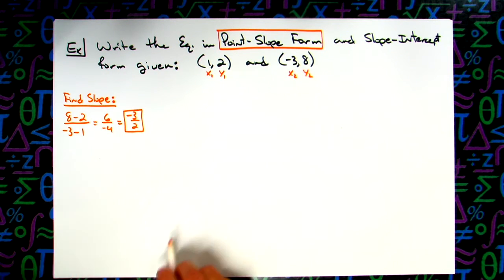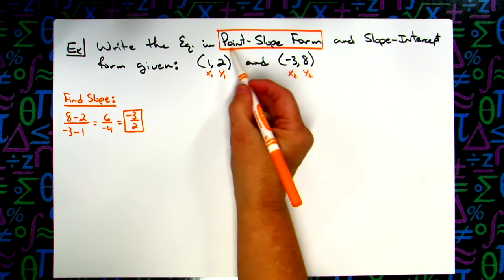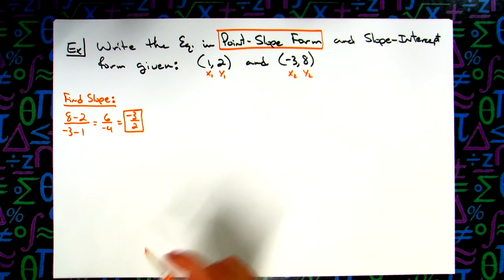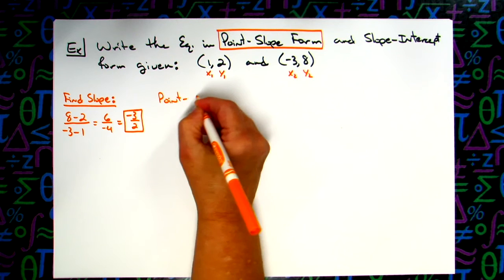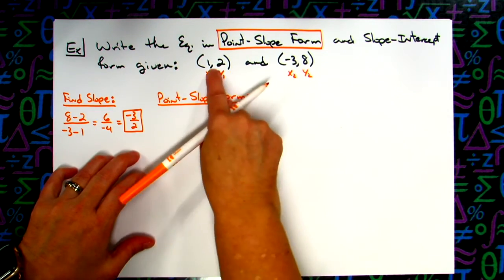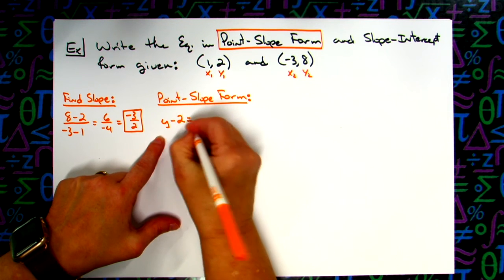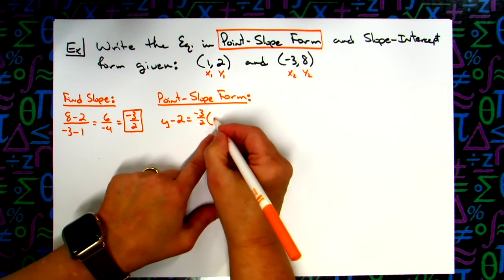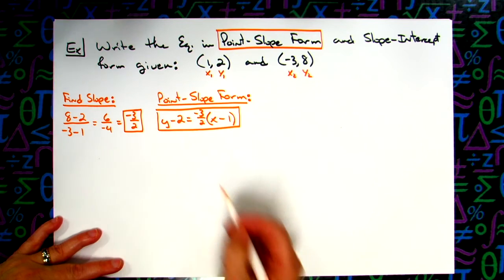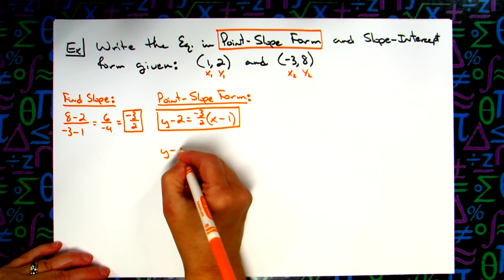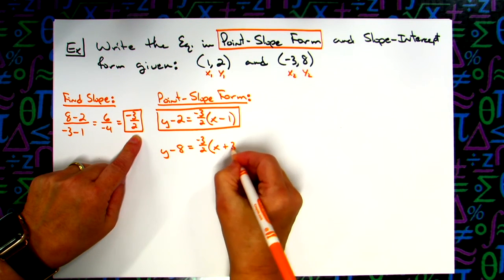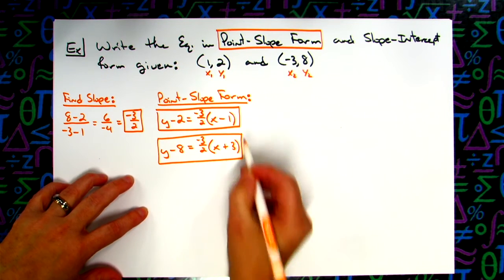Now write it in point slope form. You have the slope and two points, so you can use either point. Using the first point (1, 2): y minus 2 equals negative 3/2 times (x minus 1). Using the second point (-3, 8): y minus 8 equals negative 3/2 times (x plus 3). Both are valid answers since the problem didn't specify which point to use.